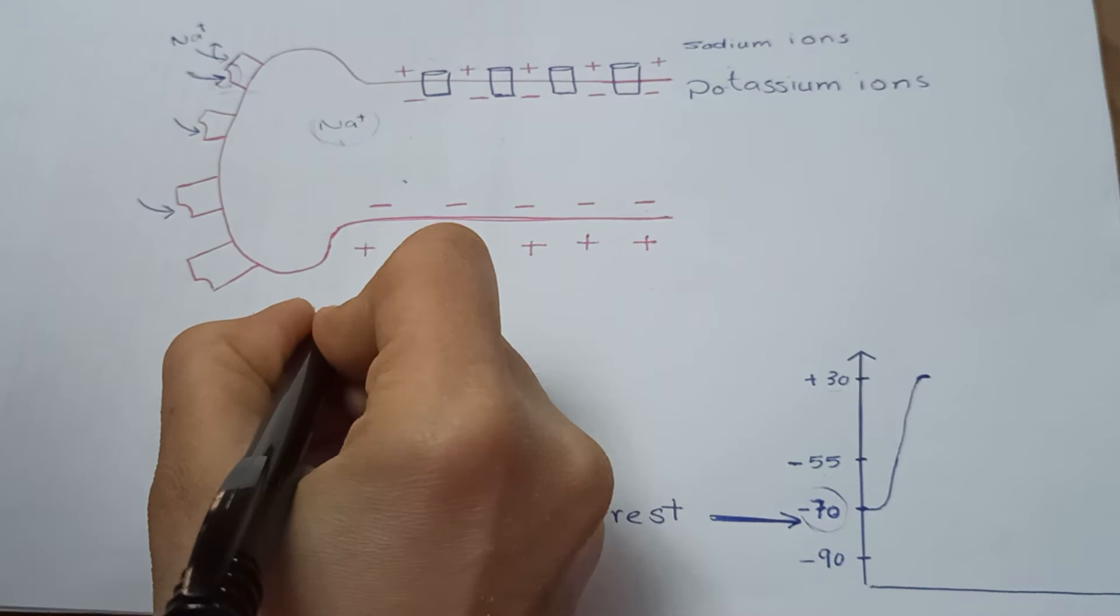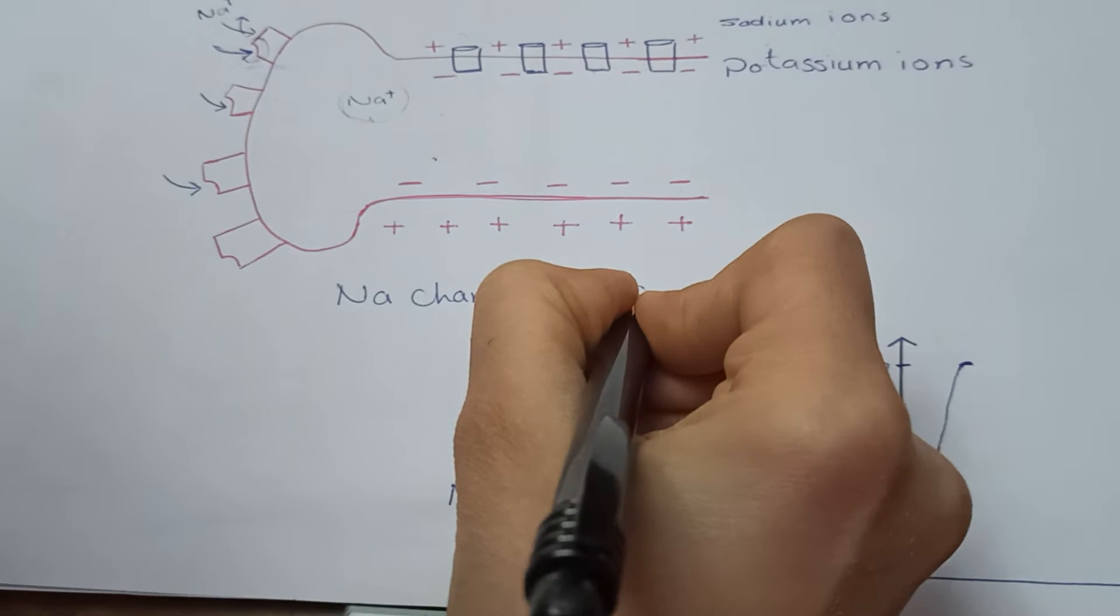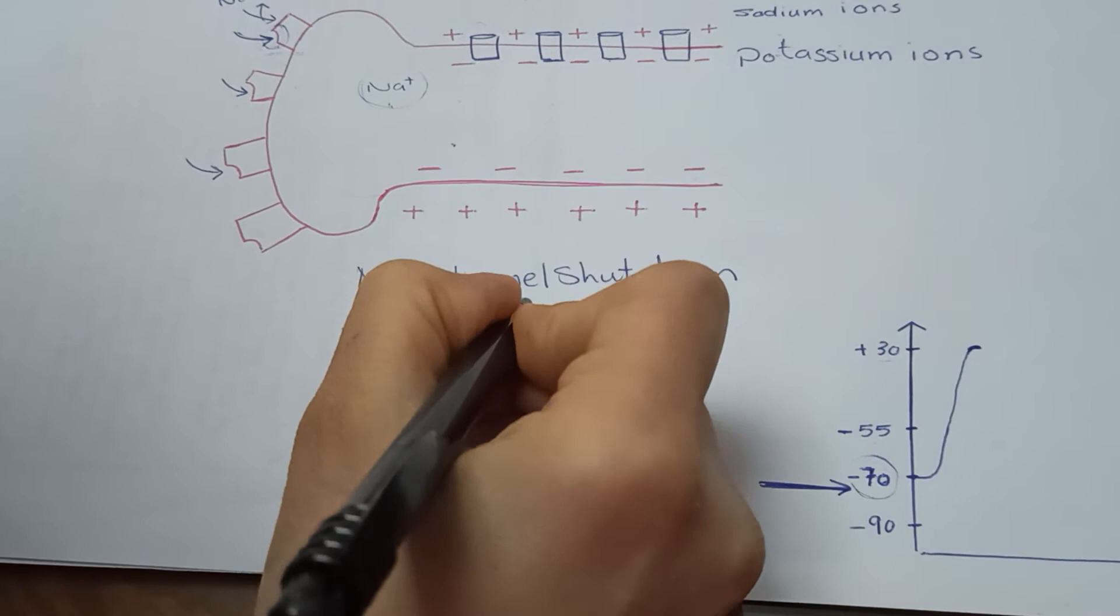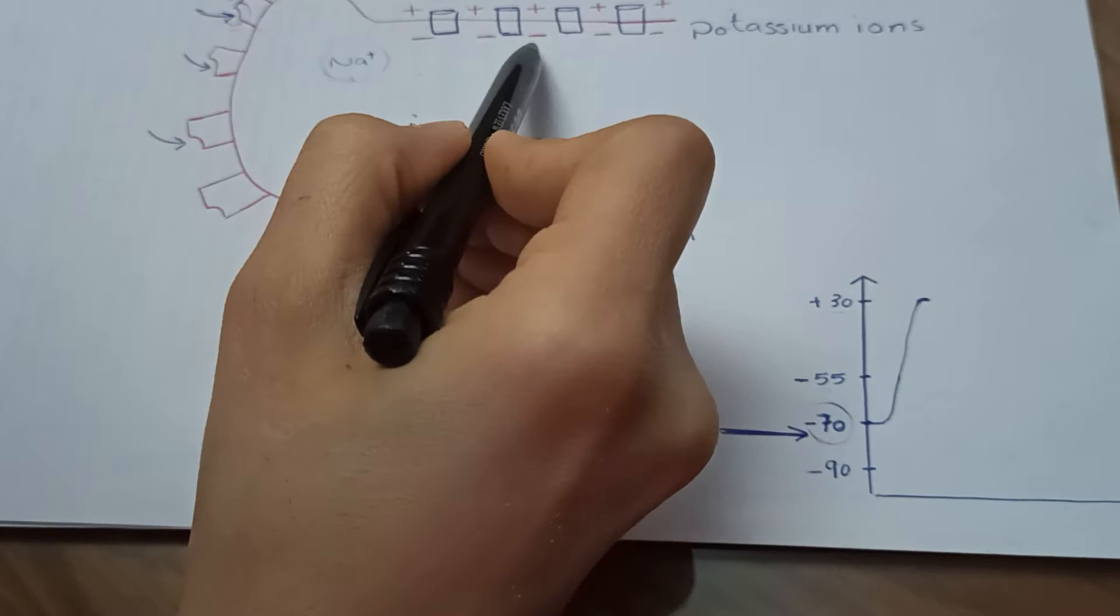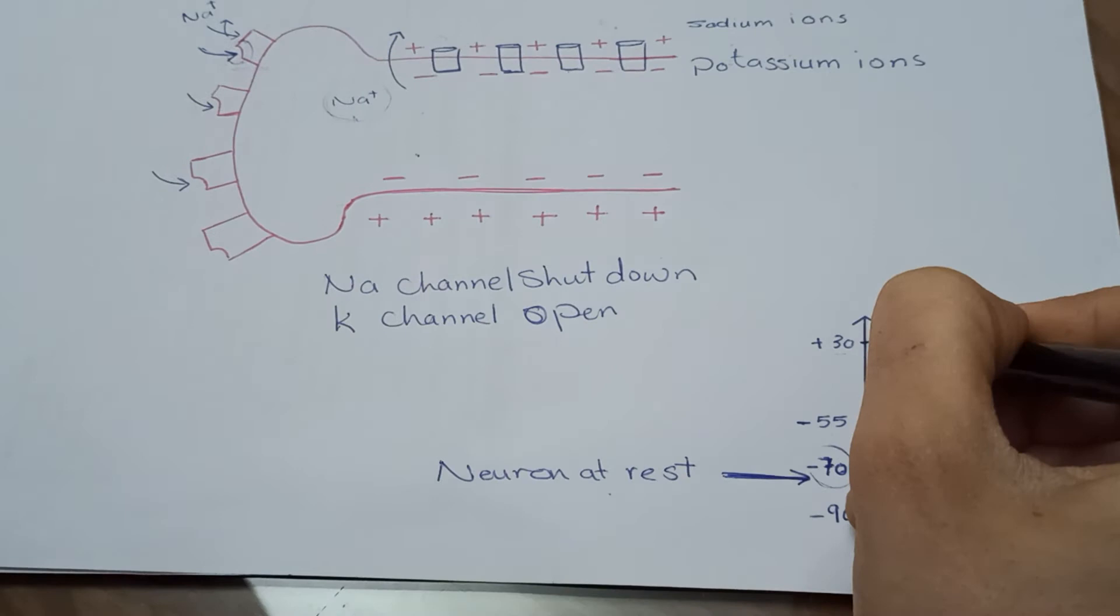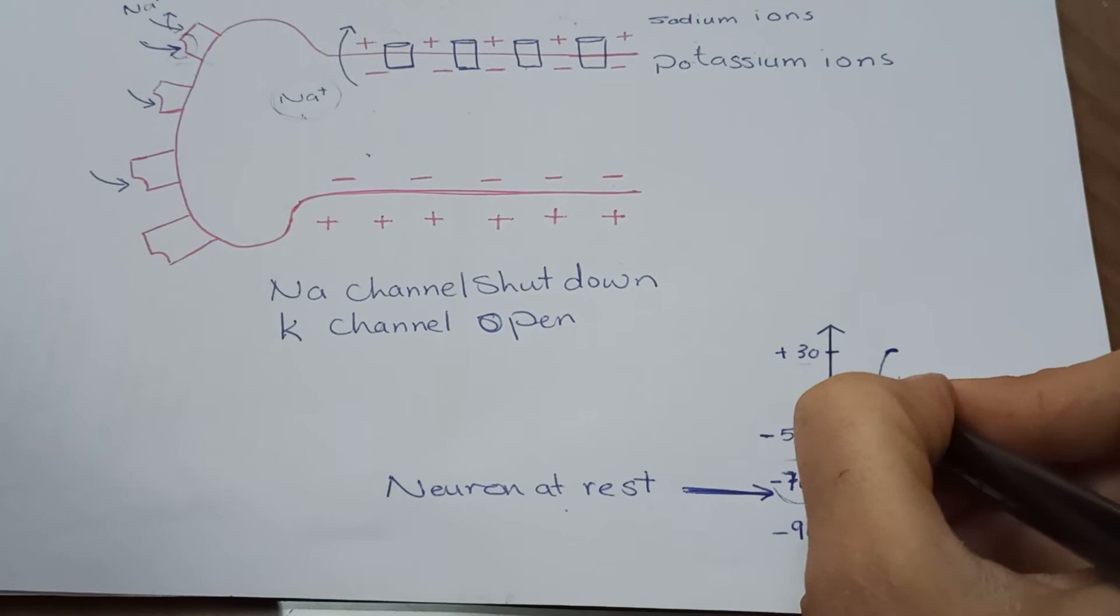Sodium channels shut down and potassium channels start to open to allow potassium ions to get outside, so negative charge will be increased again.